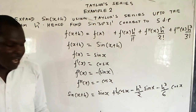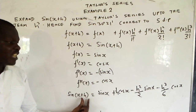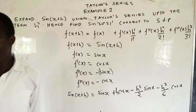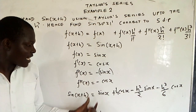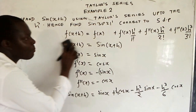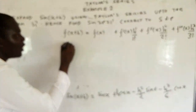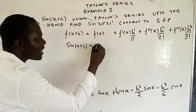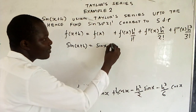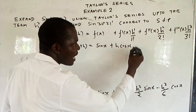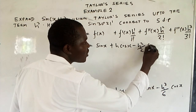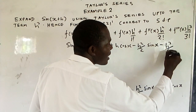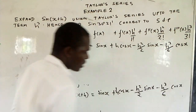So we've expanded sine x plus h up to the term h cubed. The expansion is: sine x plus h equals sine x plus h cos x minus h squared over 2 sine x minus h cubed over 6 cos x.